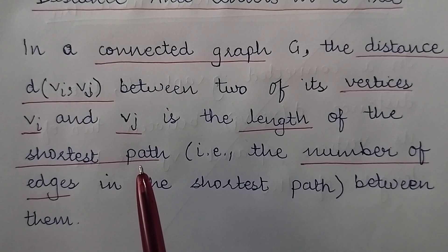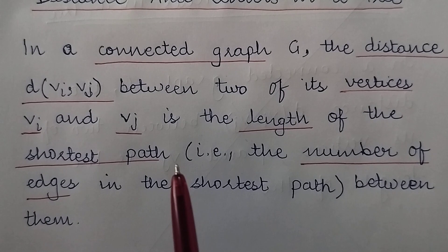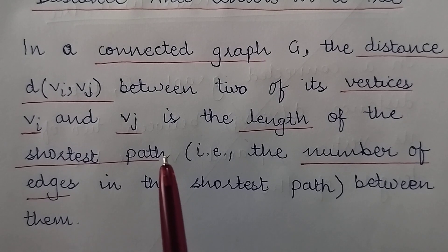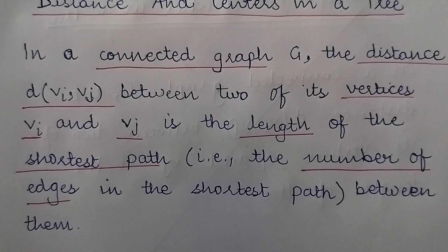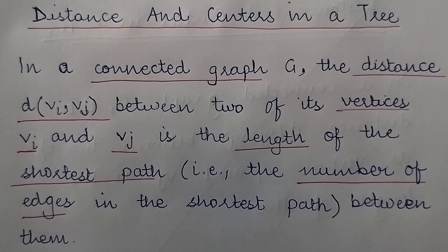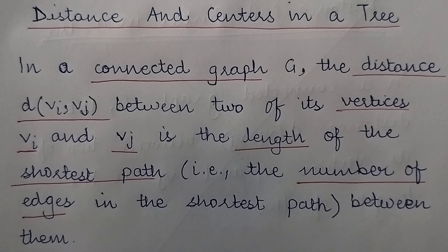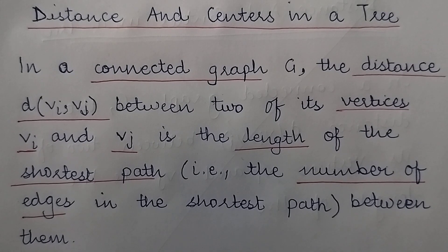Why do I emphasize on shortest path? Shortest path means the path which has the minimum number of edges. In a graph it is possible to have more than one path between any two pair of vertices. So among all those paths, the path which is shortest — that means the path which has the minimum number of edges — is considered as the distance between those two vertices.